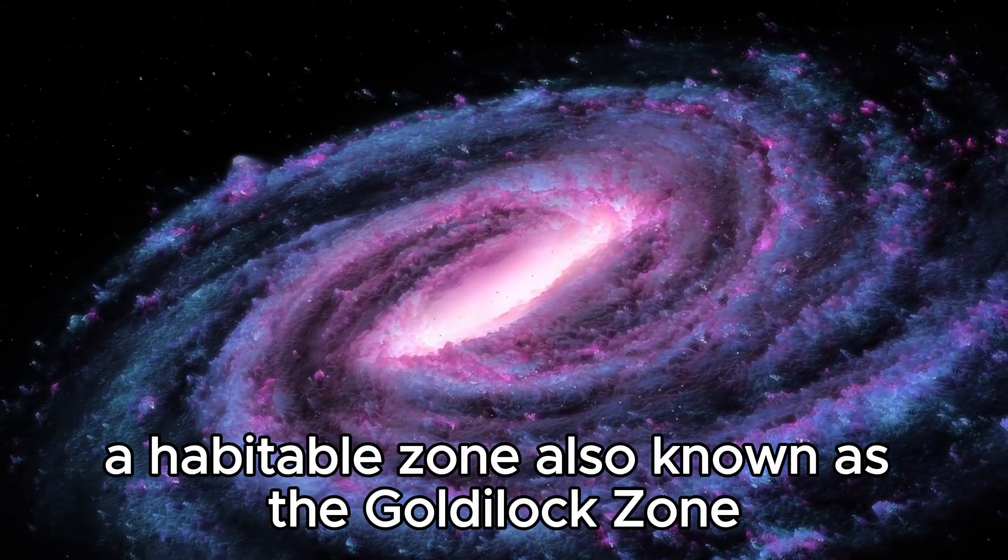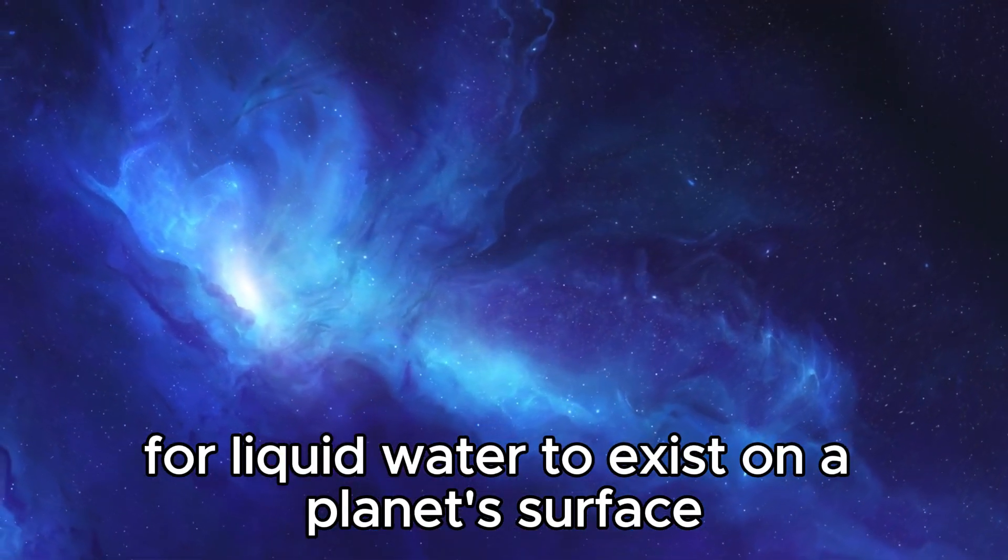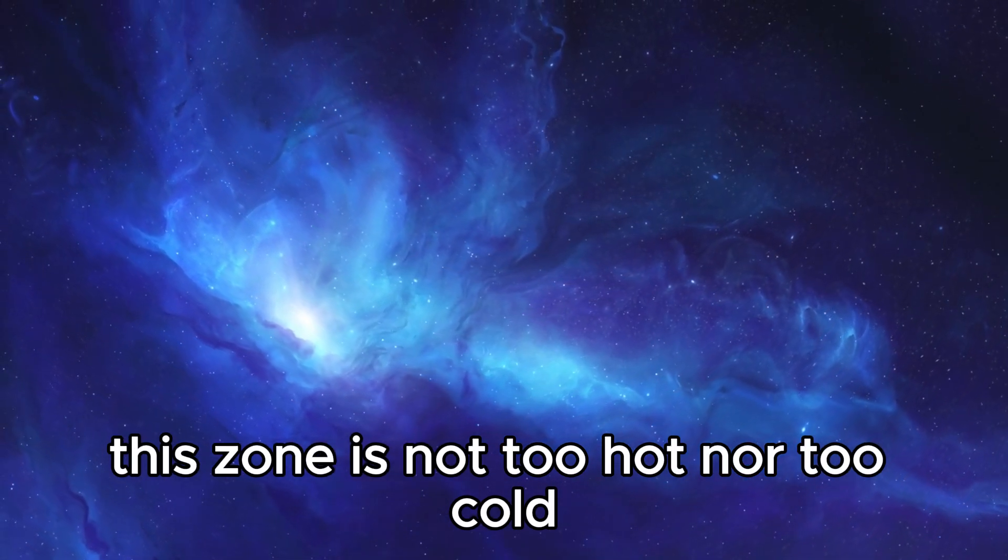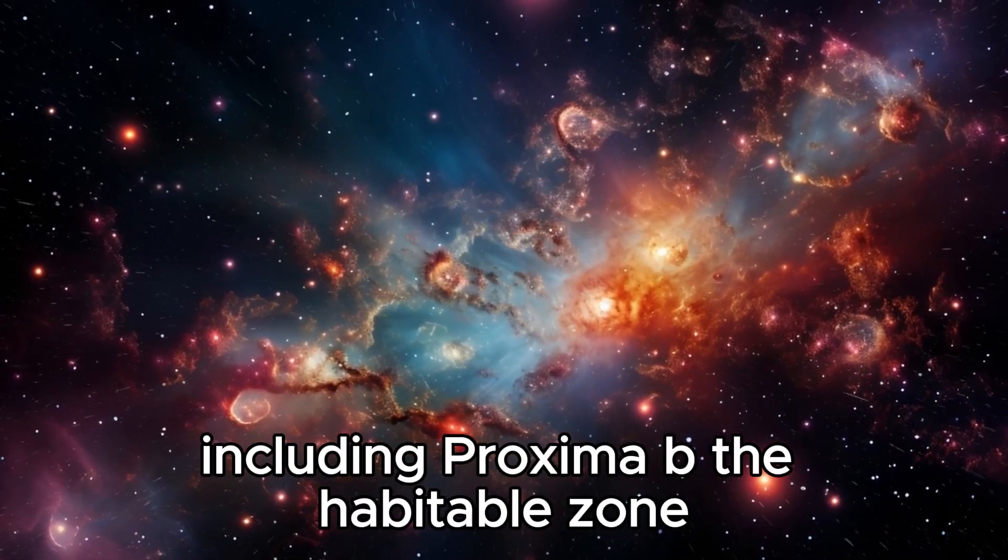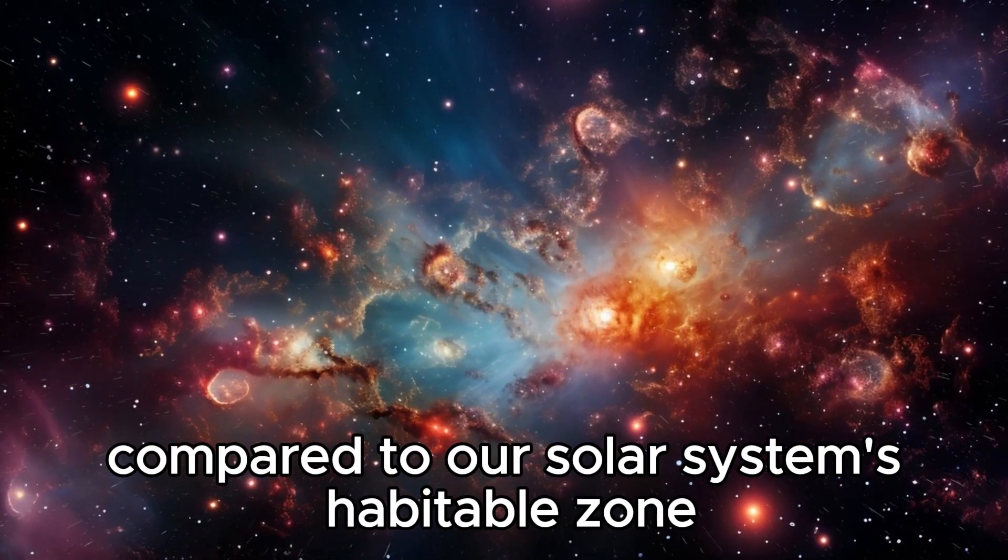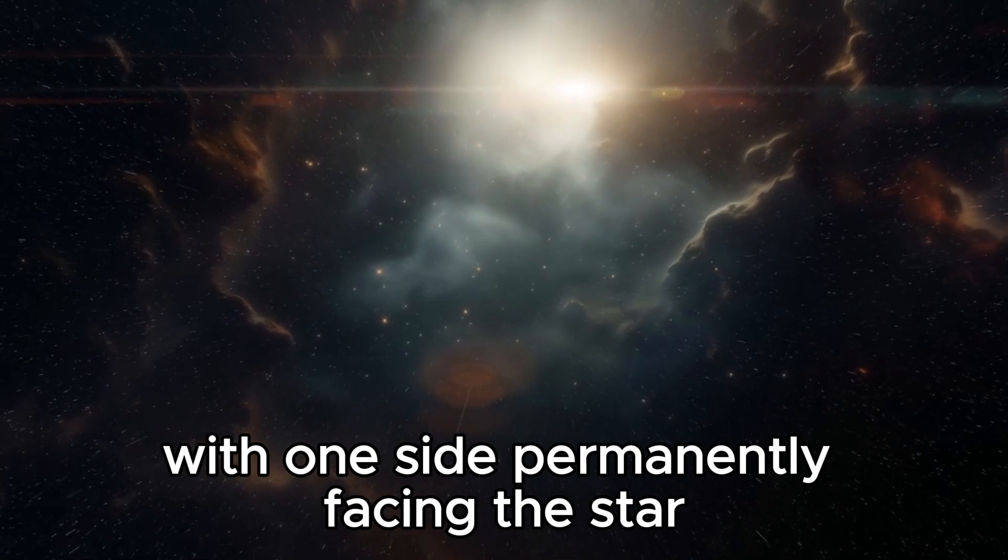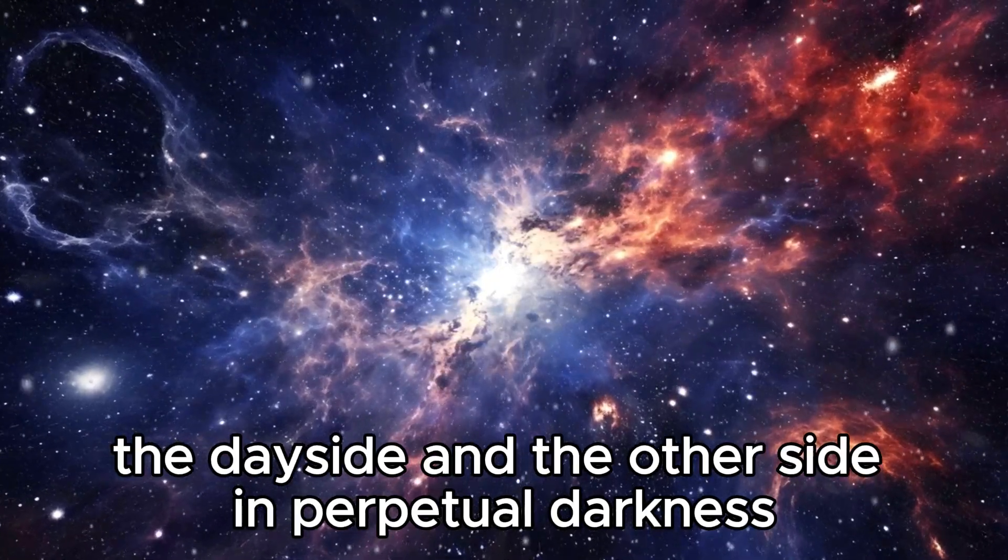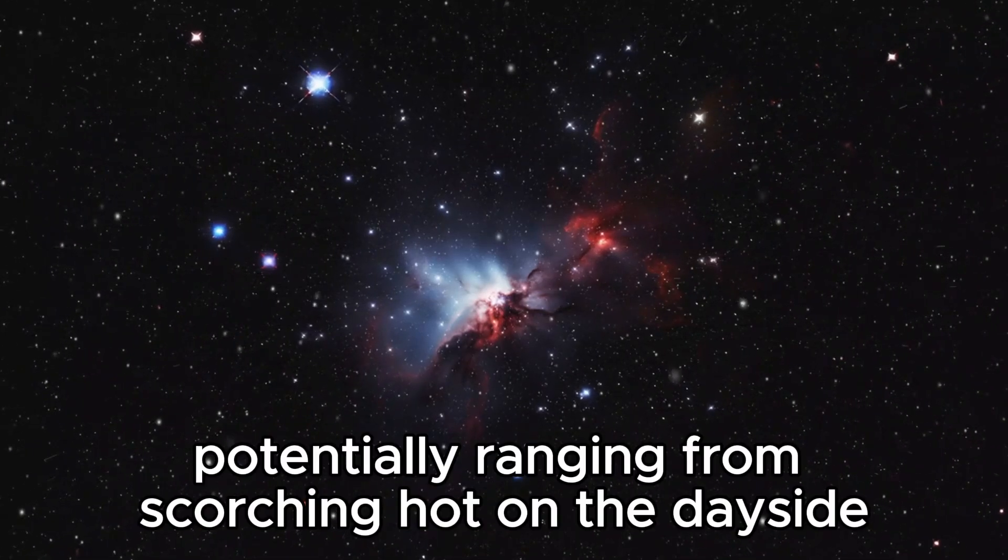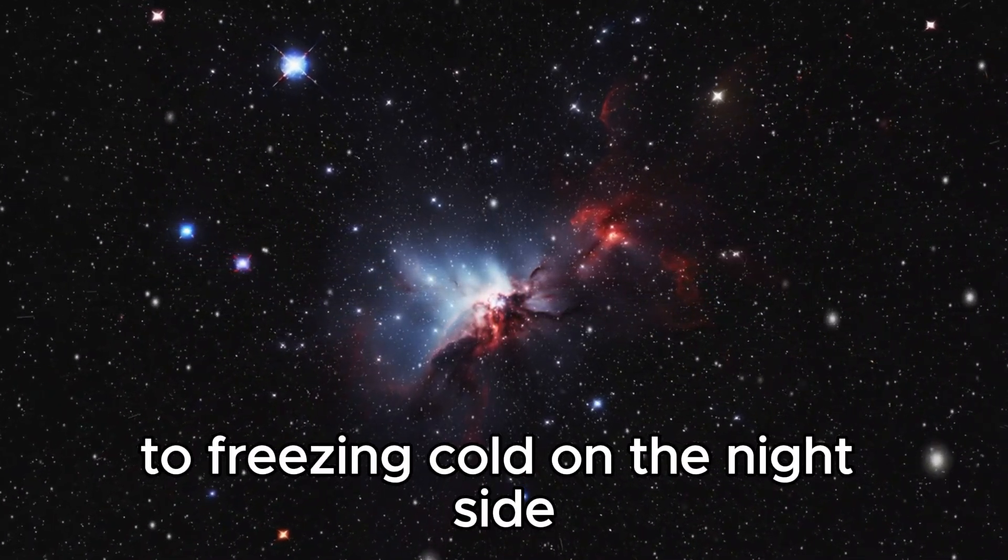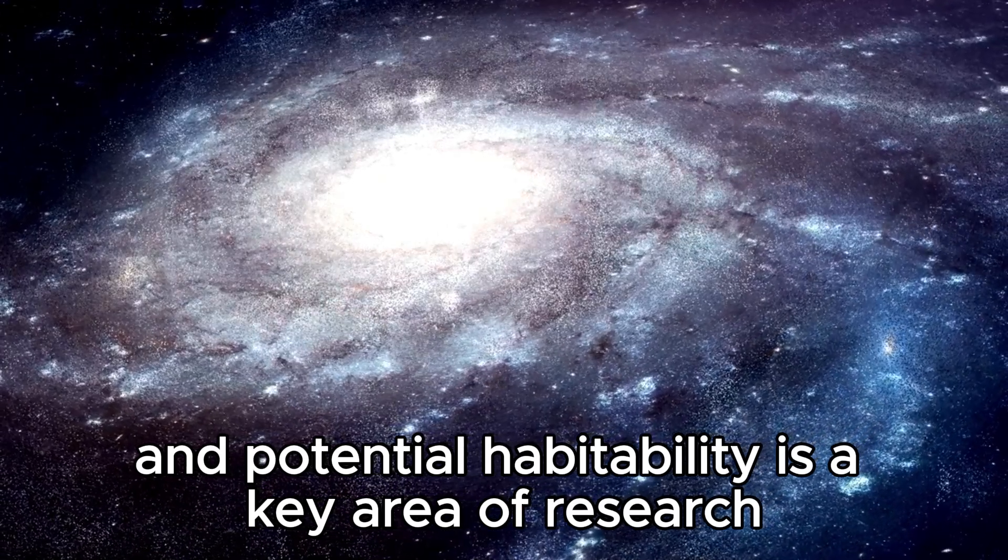The concept of habitable zones around stars is central to the search for extraterrestrial life. A habitable zone, also known as the Goldilocks zone, refers to the region around a star where conditions are just right for liquid water to exist on a planet's surface. This zone is not too hot nor too cold, allowing for the possibility of life to thrive. For Proxima Centauri and its planets, including Proxima b, the habitable zone is much closer to the star compared to our solar system's habitable zone around the sun. Proxima b's proximity to its star means that it is tidally locked, with one side permanently facing the star, the day side, and the other side in perpetual darkness, the night side.